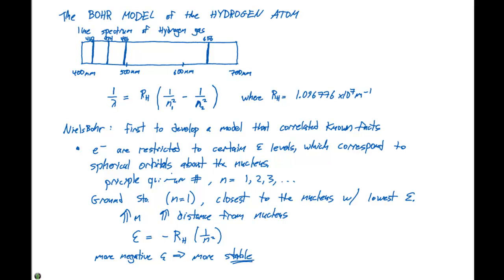So N equals one gives the most negative value. And one of the things that we can say about this is that the lower the energy, the more stable. So the more negative, that's going to give us our lowest value, which is going to make this the most stable.